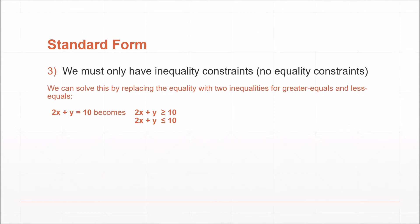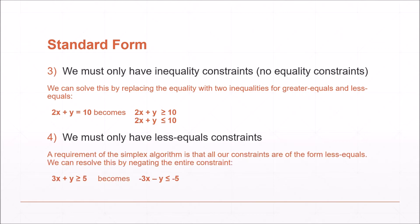Number 3: we must have inequality constraints. If we have equality constraints such as 2x plus y equals 10, we can simply replace this with a greater-equals and less-equals constraint. Number 4: we must only have less-equals constraints. If we have any greater-equals constraints left over, we can convert these into less-equals form, as required by the simplex algorithm, by negating the entire expression.